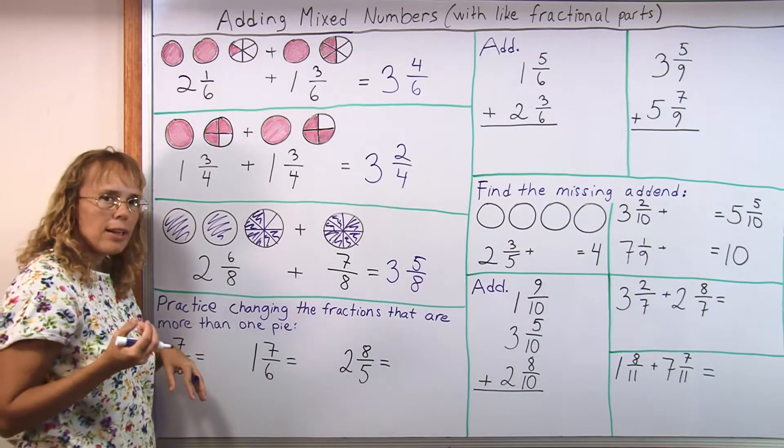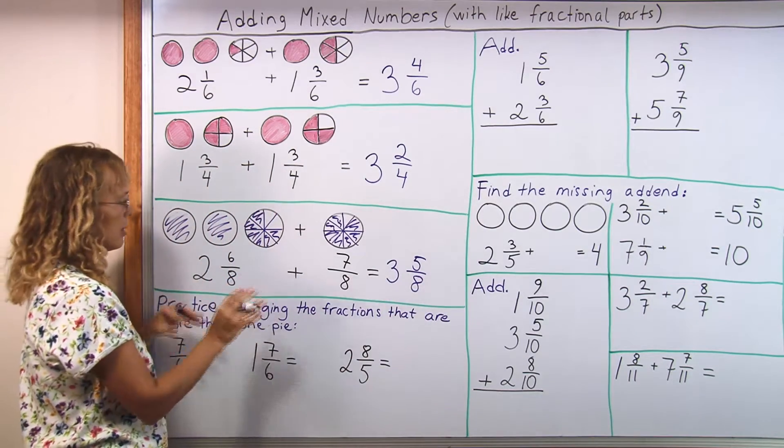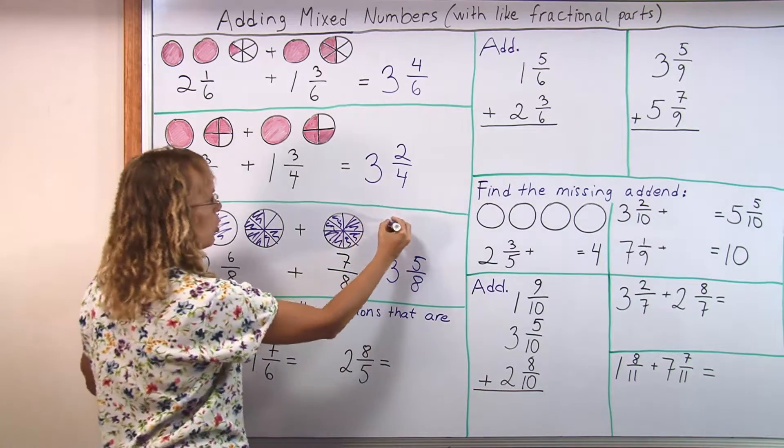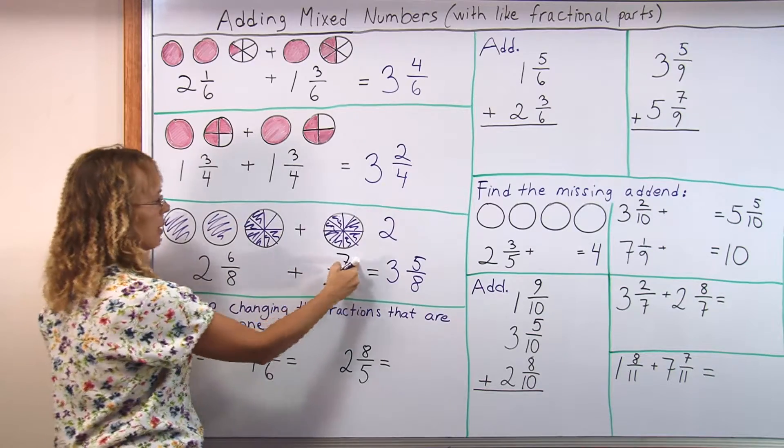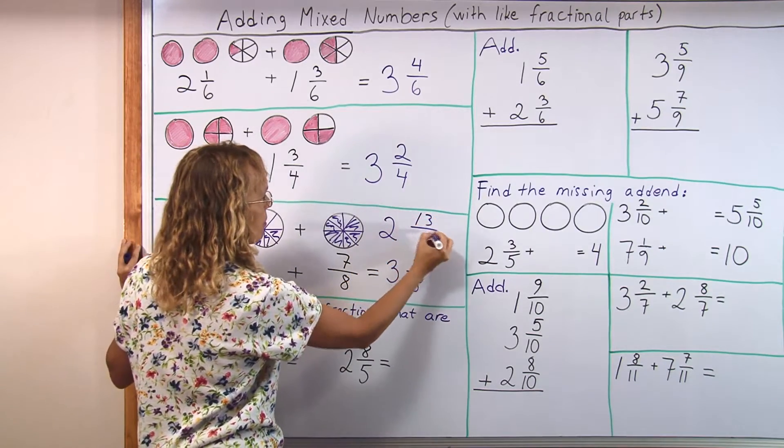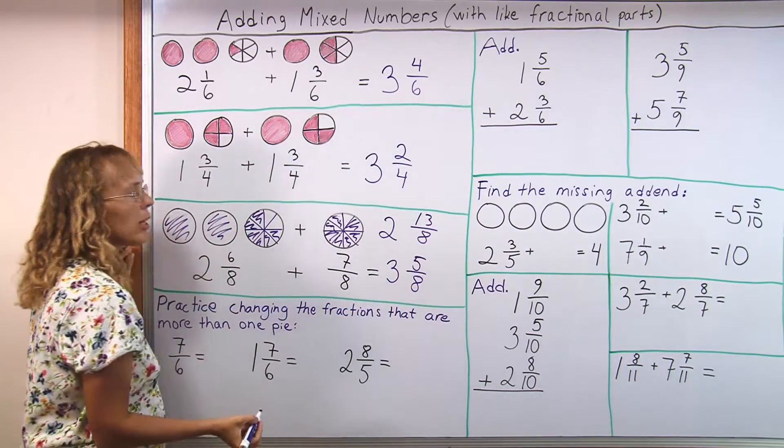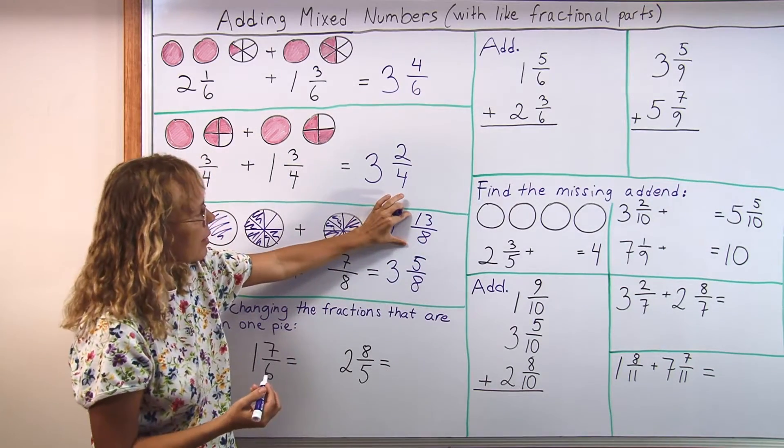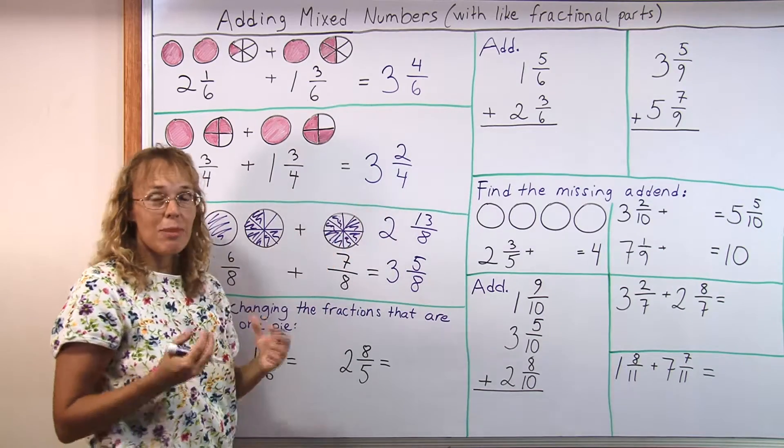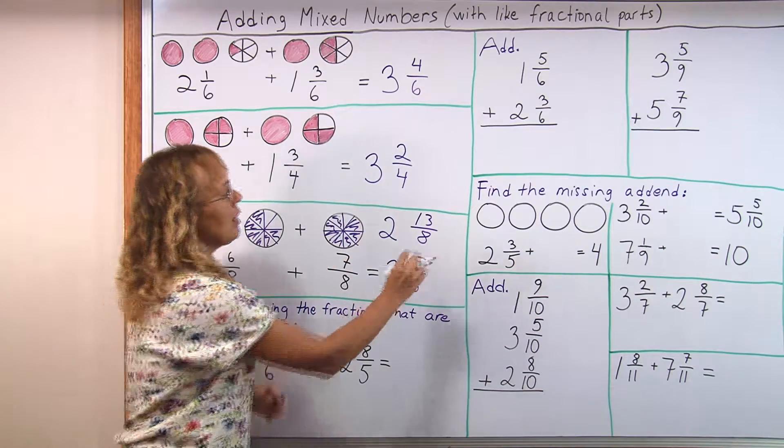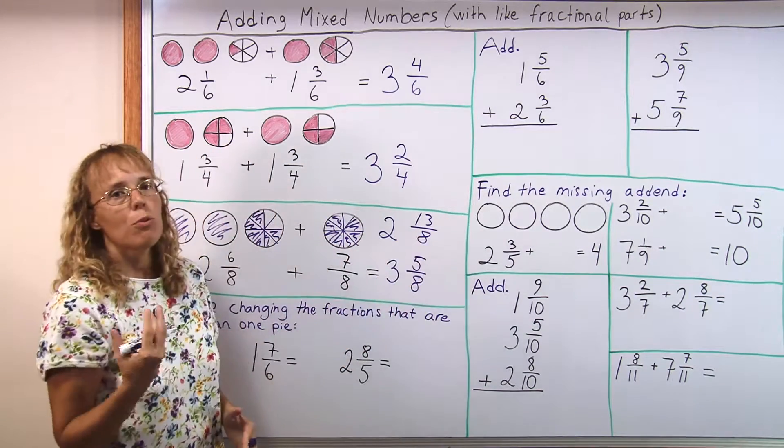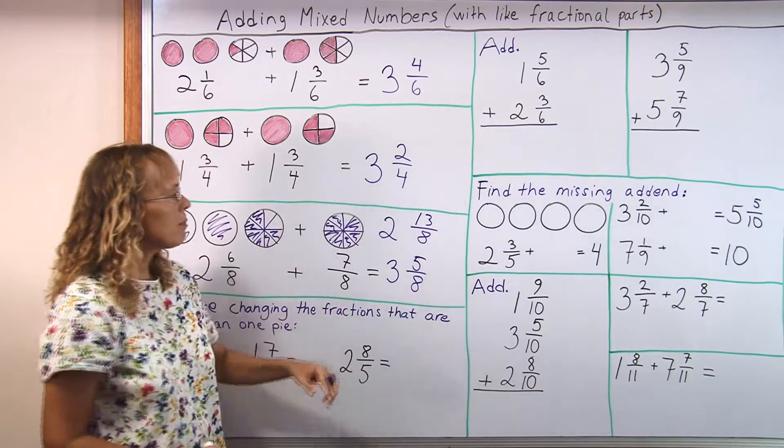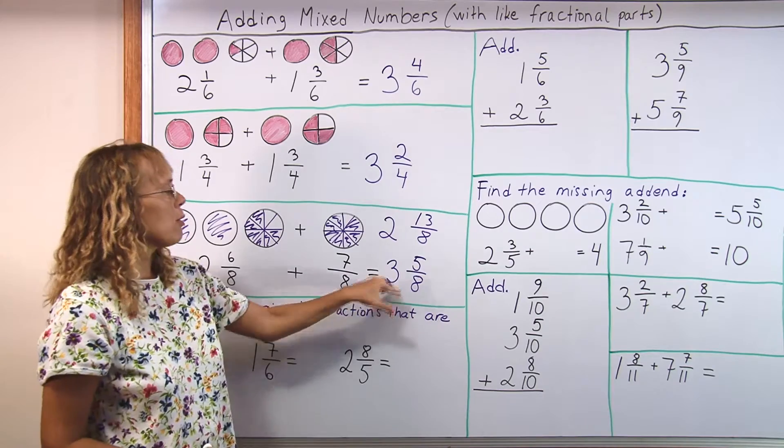If we added just the whole number parts and the fractional parts, we would get 2 and then 6 plus 7 is 13 eighths. And that's a fine way to do it. Write it as 2 and 13 eighths and then think about your 13 eighths, what happens to that? Well, that makes more than one pie. 8 eighths would give you one pie, and so there's going to be 5 eighths left over and we get one more pie, the third pie.